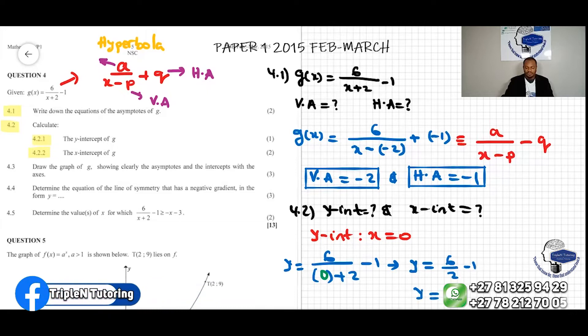And that makes y equal to 6 minus, 6 over 2 is 3, 3 minus 1 is 2. So this is the y-intercept.